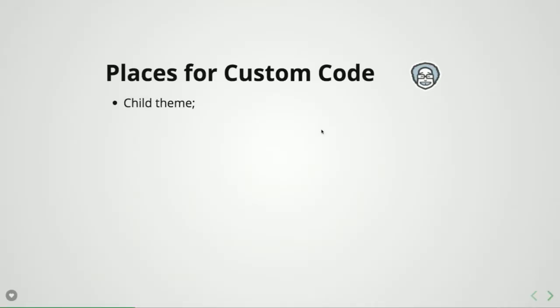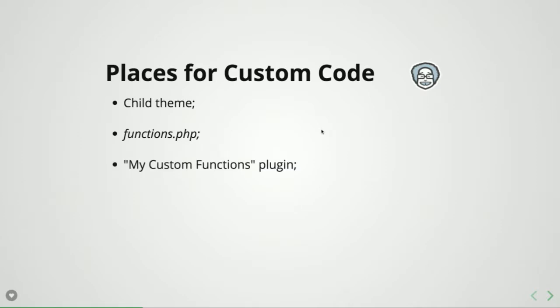So where do I put my awesome code? There are several ways to do that in WordPress. You can do it in a child theme, you can do it in functions.php of your theme — that's what that file is meant for. There is also a plugin called My Custom Functions that you can download from WordPress.org, or you can do a custom plugin. All of them have their own advantages and disadvantages.